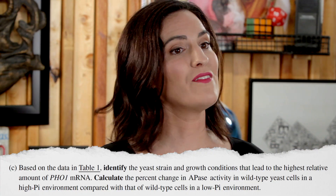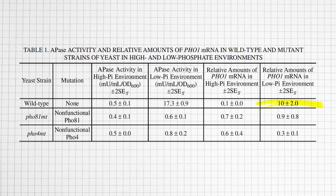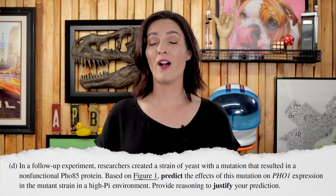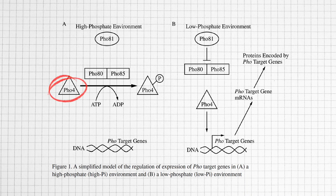Part C had task verbs identify and calculate for two points. The wild type yeast strain in a low phosphate environment had the highest relative amount of PHO1 mRNA. Percentage change is calculated as final minus initial divided by initial times 100. So here you could say negative 97.1% or a 97% decrease in APA's activity, since you were comparing the high phosphate environment to low. Lastly, we have verbs predict and justify for two points in Part D. PHO1 expression should increase in a mutated yeast strain with non-functional PHO85 protein. This is due to the fact that PHO4 can't be phosphorylated even in a high phosphate environment, so you end up in a pathway similar to the low phosphate environment. Add it all up and you could have earned nine points total for question one.